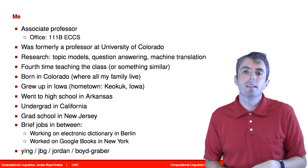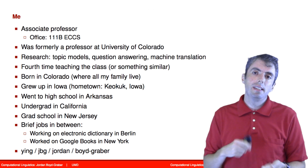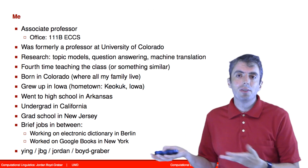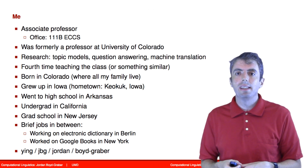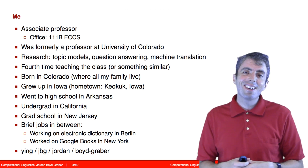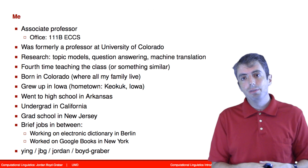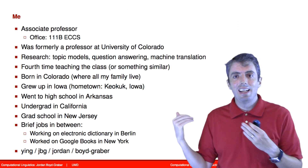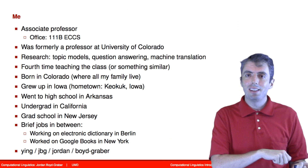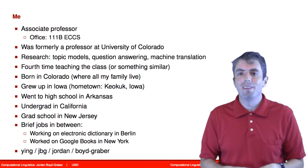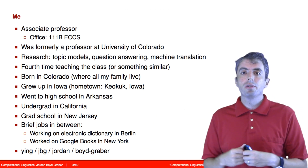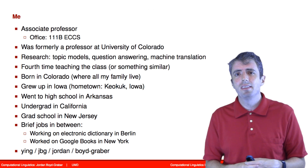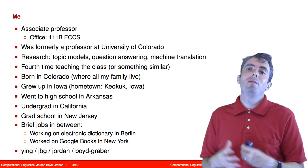I'm an associate professor here at the University of Maryland. Previously I was at the University of Colorado — Colorado is also where I was born. I did most of my growing up in Iowa, in a small town called Keokuk. I was briefly in high school in Arkansas, did my undergrad in California, grad school in New Jersey, then came to Maryland for a postdoc, was faculty at Colorado for a while, and then came back to Maryland to become faculty. This is the fourth time that I've taught this course or a very similar course, but this year is going to be quite different — I'm incorporating more deep learning than I have in previous iterations.